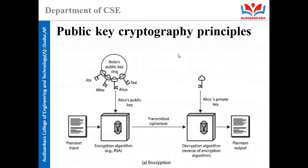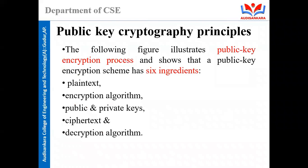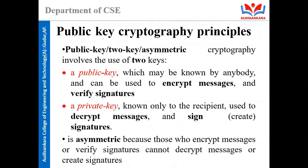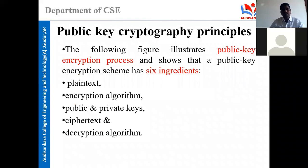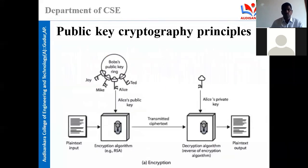This figure illustrates the public key encryption process and shows that a public key encryption scheme has six ingredients: plain text, encryption algorithm, public key, private key, cipher text, and decryption algorithm.